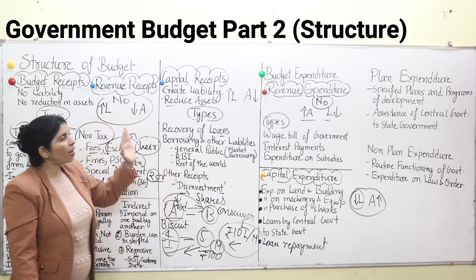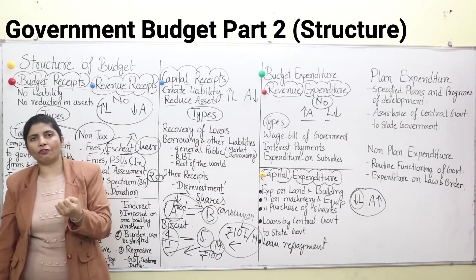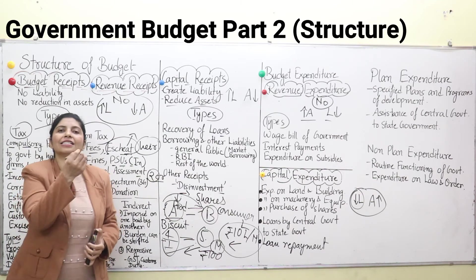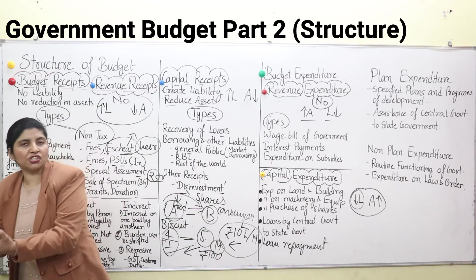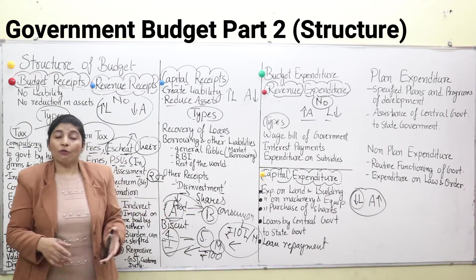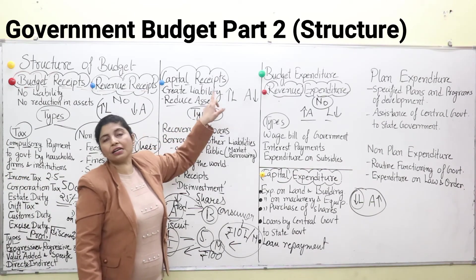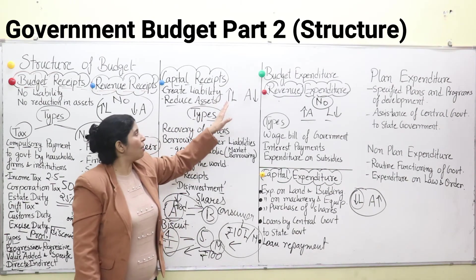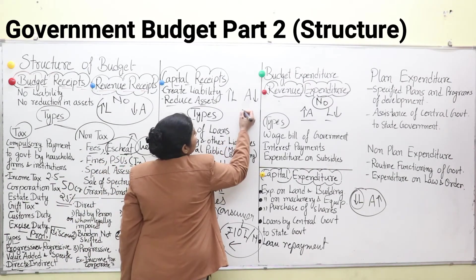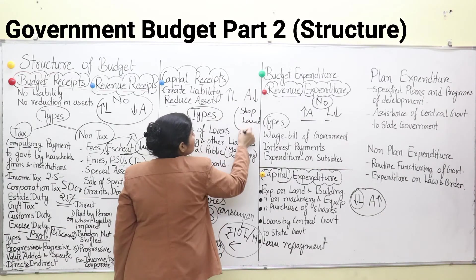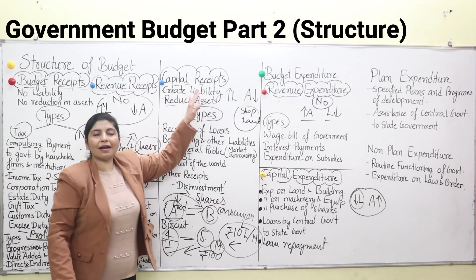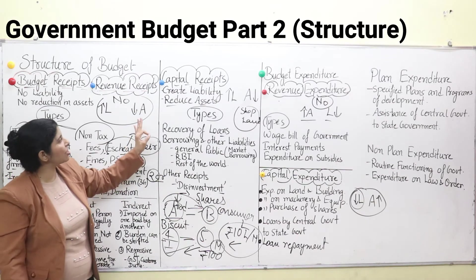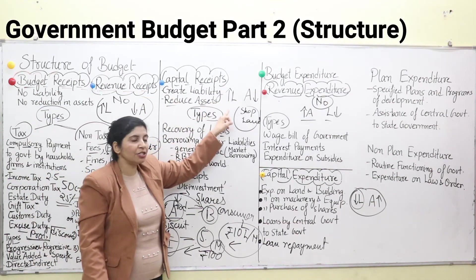Now we move on to capital receipts. What are capital receipts? For example, whenever we want some capital for any business — if I want to open a factory — I will get capital either by selling my property, mortgaging my property, or by taking a loan from family, siblings, or a bank. In that case it will either increase my liability — because loans have to be paid back — or decrease my assets, if I sell my shop, land, or other assets. Likewise, capital receipts are receipts of the government which either increase the liability of the government or decrease the assets of the government.